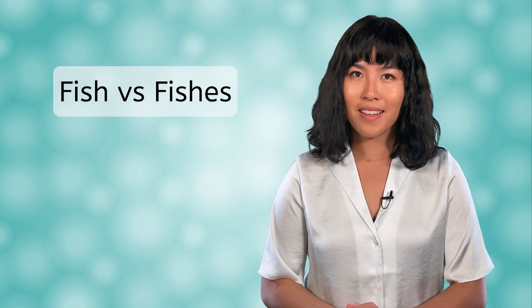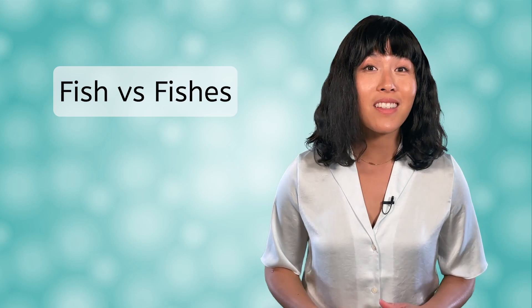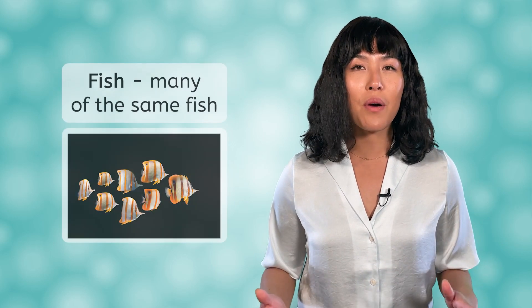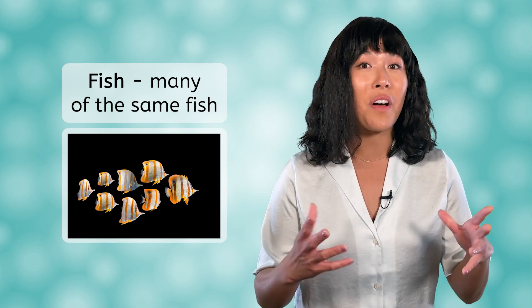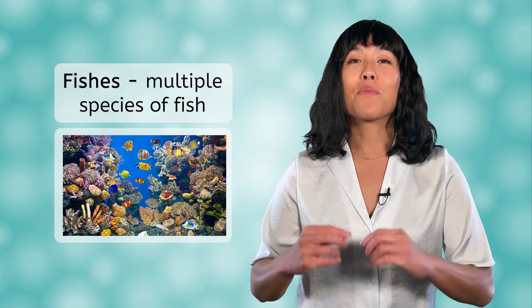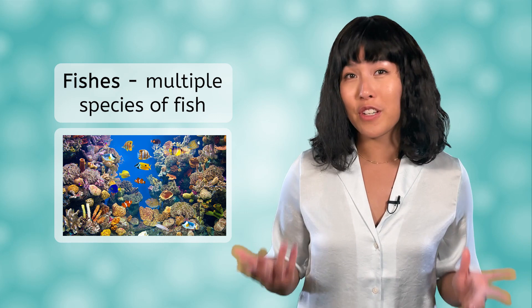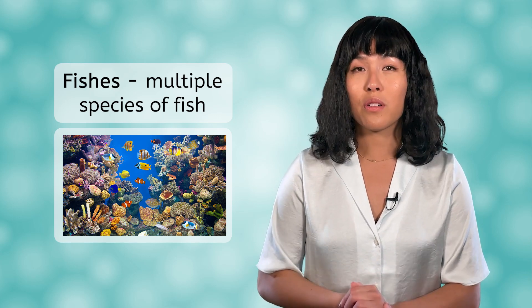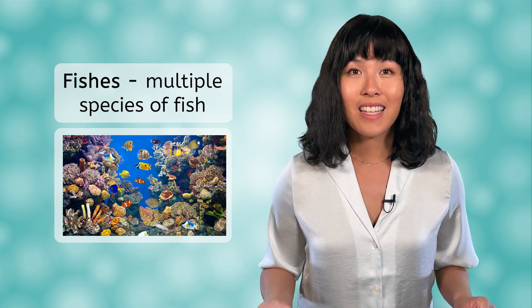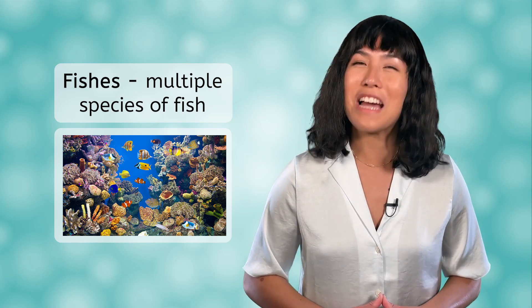Let's start by addressing the elephant in the room. If you have noticed, I have been using the word fishes instead of fish throughout this lesson. Traditionally, we use the word fish for all plural versions of the word. However, in biology, there is a difference. If you are talking about the plural of a single type of fish — for example, a school of salmon swimming up a river — then you use the plural word fish. But if you are talking about multiple species of fish — for example, a fish tank in an aquarium that has five different fish species — then you could use the regular plural fish or the plural word fishes. They are interchangeable, so you don't have to worry too much about it, but it is kind of fun to say fishes.